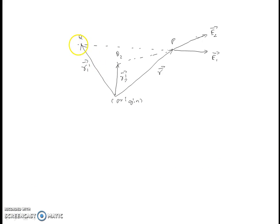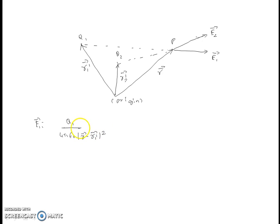In this figure we have two source charges q1 and q2, both point charges, located at positions r1 dash and r2 dash. The electric field at point P due to charge q1 is given by E1, where E1 = q1 divided by 4 pi epsilon naught times the magnitude of (r minus r1 dash) squared. Similarly, E2 is the electric field at point P due to charge q2.